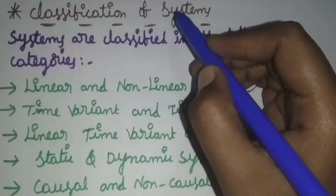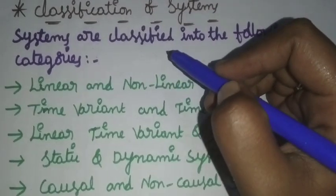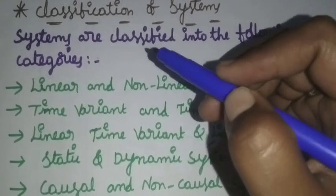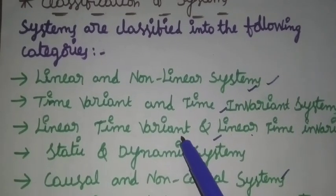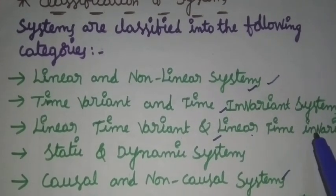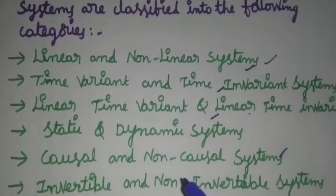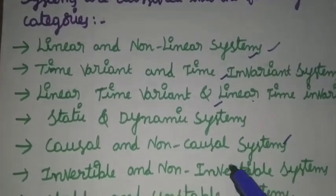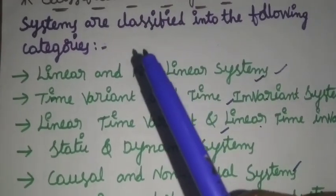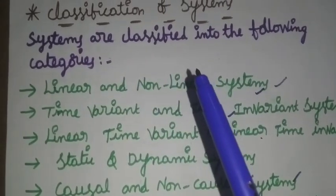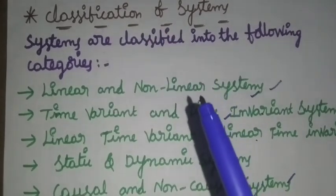In this session, we will see the classification of systems. Systems are classified into the following categories: linear and non-linear systems, time-variant and time-invariant systems, linear-time-variant and linear-time-invariant systems, static and dynamic systems, causal and non-causal systems, invertible and non-invertible systems, and stable and unstable systems. These are the categories in signals and systems, specifically the classification of systems.